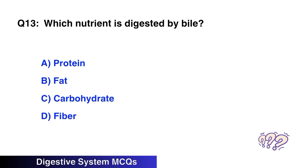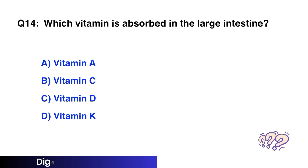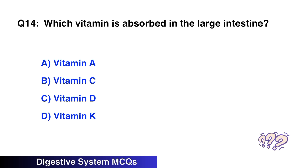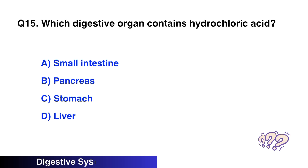Question number thirteen: Which nutrient is digested by bile? The right option is B, fats. Question number fourteen: Which vitamin is absorbed in the large intestine? The right option is D, vitamin K.